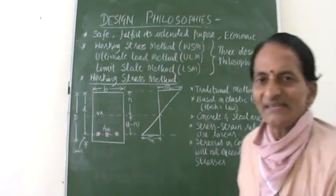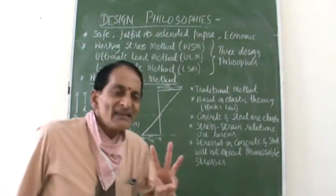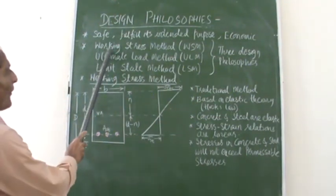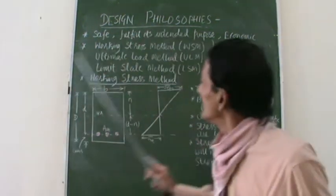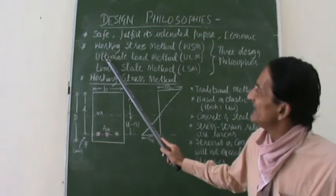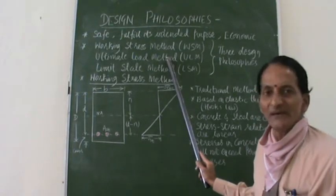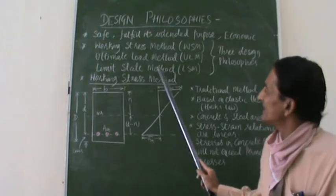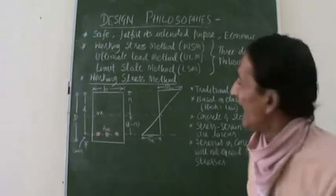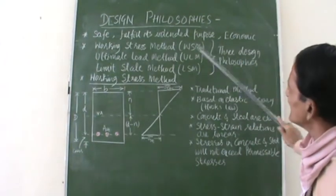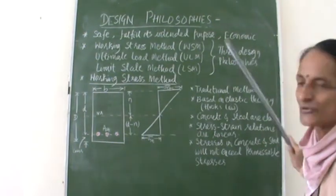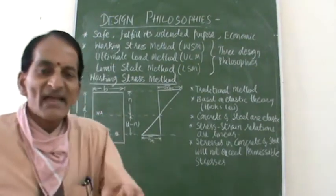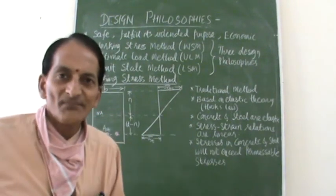When I come to RCC, there are three different design philosophies. The first one is the Working Stress Method, also called WSM. Another one is the Ultimate Load Method, called ULM. And another one is the Limit State Method, called LSM. By using any one of these methods, I can design my RCC structures.